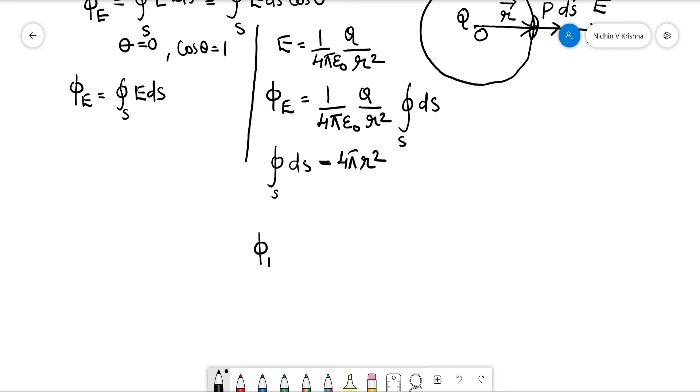Phi_E equal 1/(4πε₀) q/r² into 4πr². 4π cancels, r² cancels, and our final result is this will give the final result as total flux linked phi_E equal 1/ε₀ times, here the charge enclosed is q. So this is our Gauss's theorem proof complete.